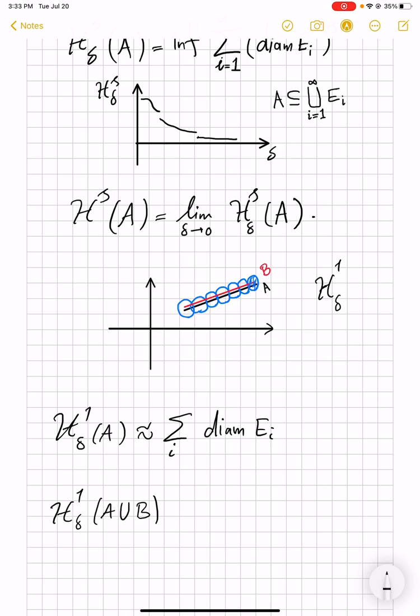which is on the one hand bigger than H^1_δ of A, because A is a subset of A union B, obviously, is also less than the diameters E_i added up, because they form a covering of it. So, as well as A,